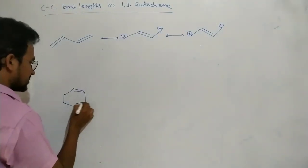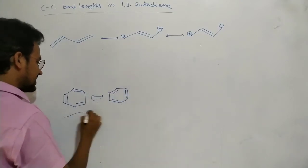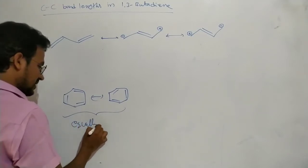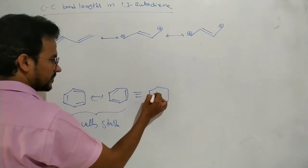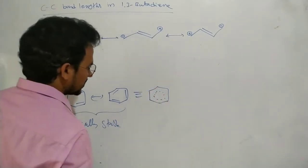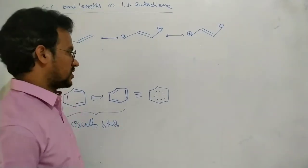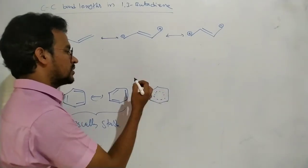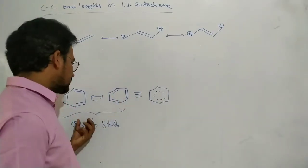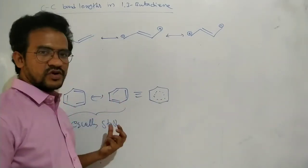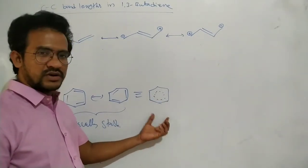In benzene, two resonant structures are there. These two resonant structures are equally stable. Now, it is a resonance hybrid. That means here, all carbon-carbon bonds have the same nature — all carbon-carbon bonds have the same double bond nature. Because this resonance hybrid is an equal contribution of these two resonant structures. Of course, it is a real structure. In this case, all carbon-carbon bonds are equal.